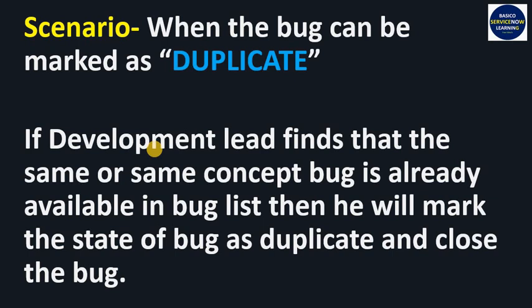The next scenario is Duplicate. When can a bug be marked as Duplicate? If the development team lead finds that the same bug — or a bug of the same concept — is already available in the bug list or bug reporting tool, then they mark the state as Duplicate and close the bug.